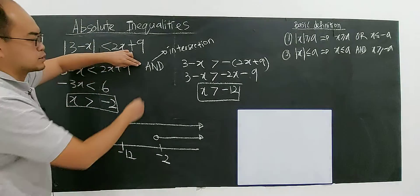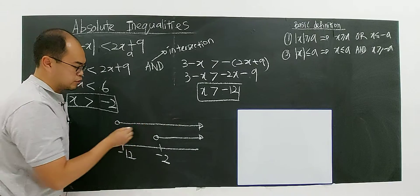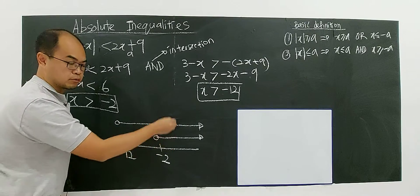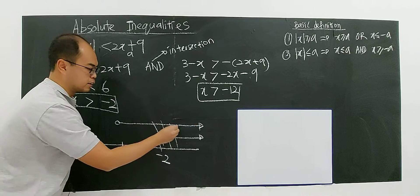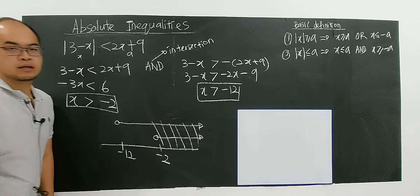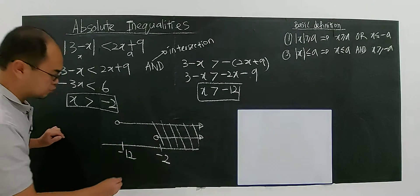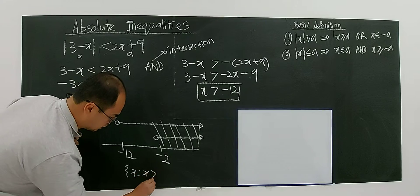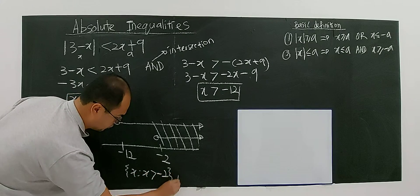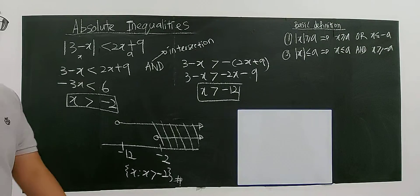then you see the operation here is intersection, persilangan. So if union, this will be your result. If intersection, this will be your result, where the 2 line overlay, right? So then your result for this case will be x greater than negative 2.